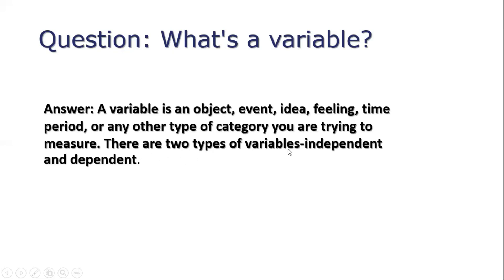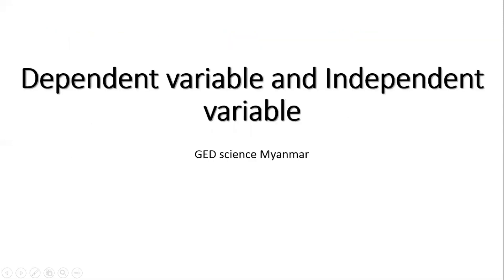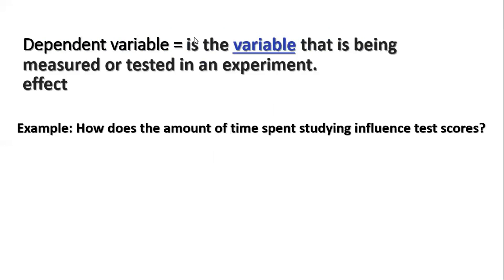There are two types of variables: Independent and Dependent. A dependent variable is the variable that is being measured or tested in an experiment.